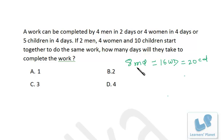4 men in 2 days, that means 8 men-days. 4 women in 4 days, that means 16 women-days. Or 5 children in 4 days, that means 20 children-days. That means 1 child will take 20 days, or we can say 20 children will take 1 day.